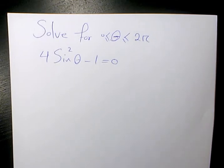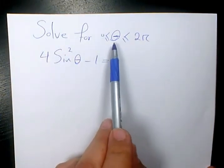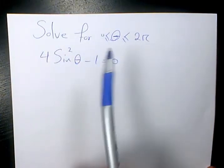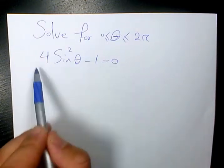In this video, I selected this trigonometric equation, which is 4 sine squared theta minus 1 equals 0. And we need to solve it for theta when theta is between 0 and 2 pi. So the first thing I need to solve is this quadratic equation.